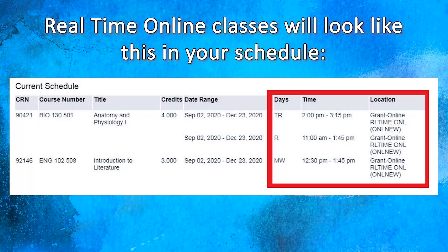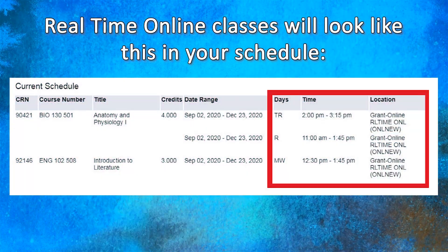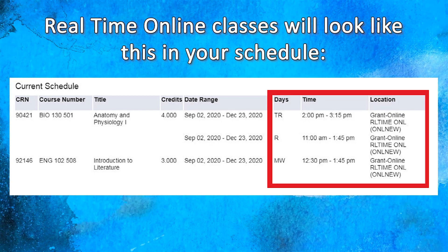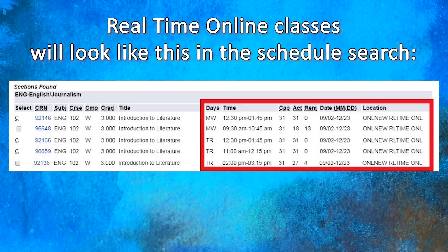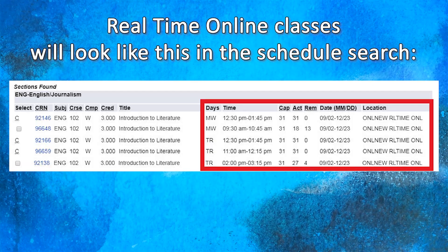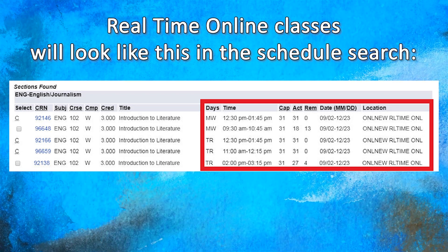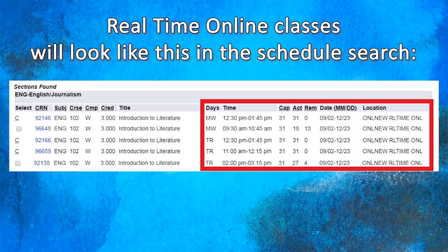If your class has a designation of real-time online, your schedule will look like this. Real-time online classes also take place in an online format, but these classes recreate the in-person classroom experience using virtual instruction. You will access your class through a link that will be provided by your instructor. You will meet and learn in a real-time virtual classroom along with other class members.